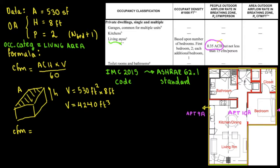Since it's a living area, we're taking this number, 0.35 air changes per hour. But not less than 15 CFM per person. So now, since we have the occupancy category, now we continue with the calculation.